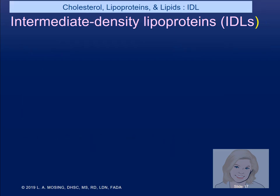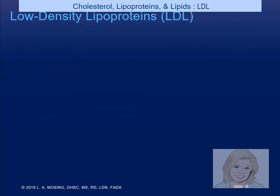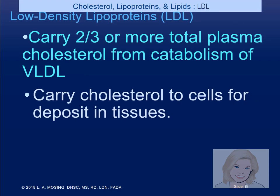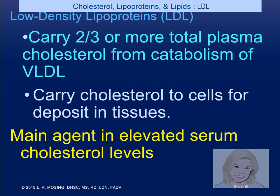Low-density lipoproteins — know this — are the worst. They carry two-thirds or more of total plasma cholesterol from the breakdown of VLDL. Why are they so deadly? They carry cholesterol to the cells and deposit it in the tissue, developing atherosclerosis. They are the main agent in elevated serum cholesterol. When someone looks at total cholesterol, they zero in on LDL.